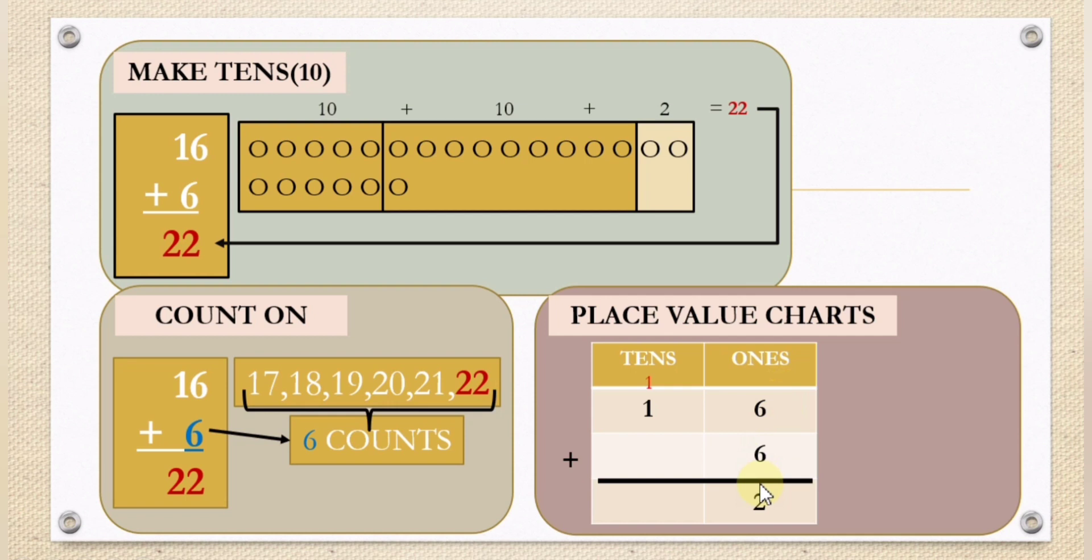We write 2, but the 1 in 12 belongs to the place values of tens. So what we are going to do is carry it over to the top. Here we have 1. So the answer is 1 plus 1 is equal to 2. The answer is 22.